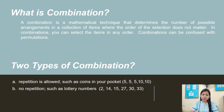So what is combination? A combination is a mathematical technique that determines the number of possible arrangements in a collection of items where the order of the selection does not matter. In combinations, you can select the items in any order.